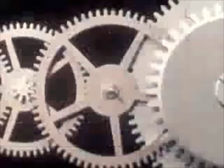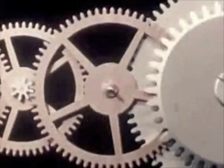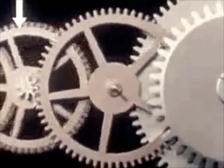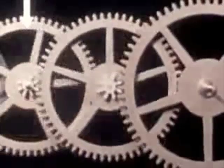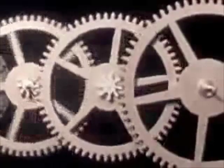A partial revolution of the center wheel drives the third wheel a complete revolution, and this in turn drives the fourth wheel much further. As a result, a few turns of the mainspring barrel driven by the mainspring will drive the escape wheel many, many revolutions, enough to last a full day and longer.